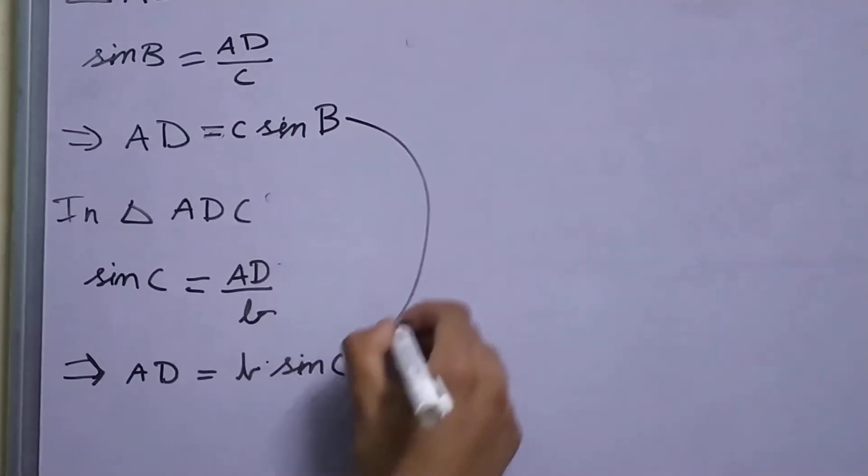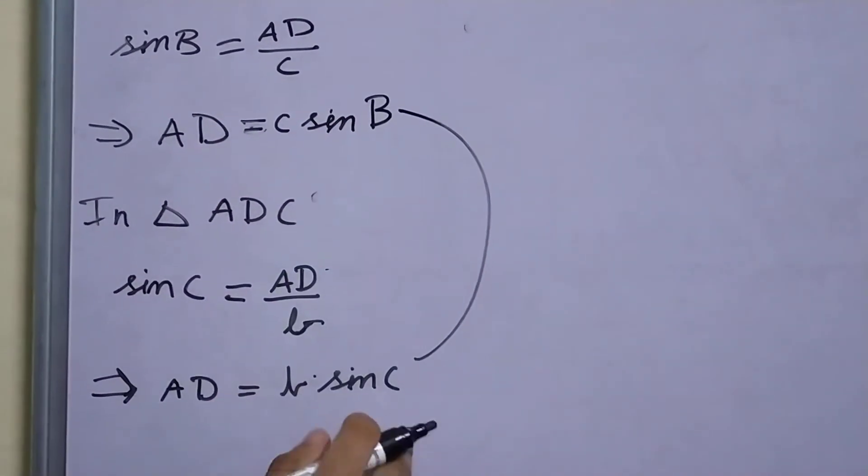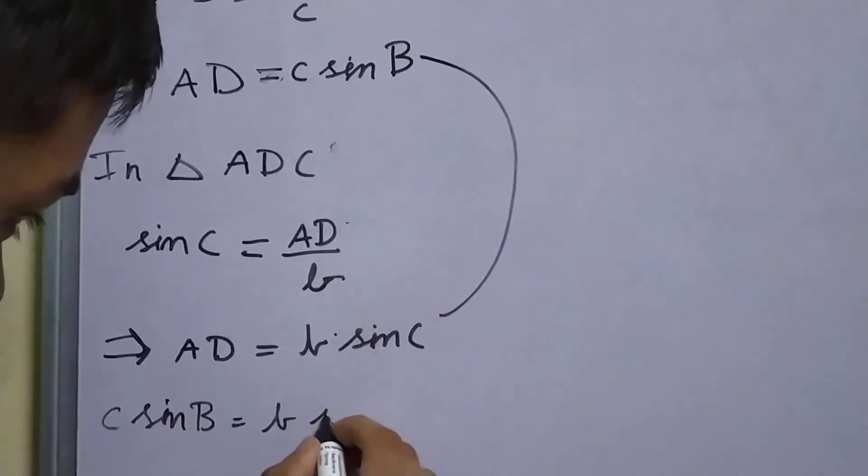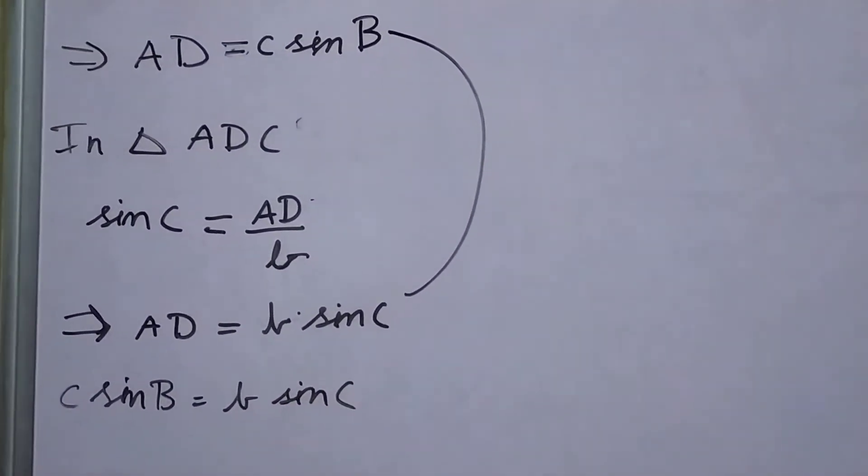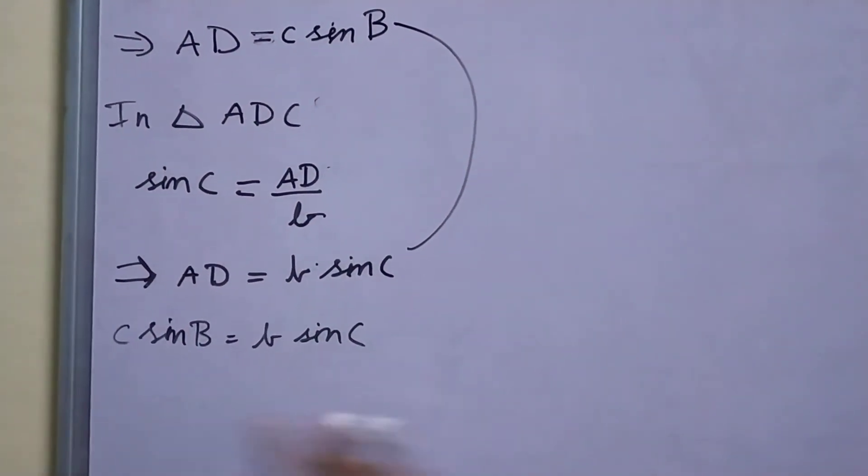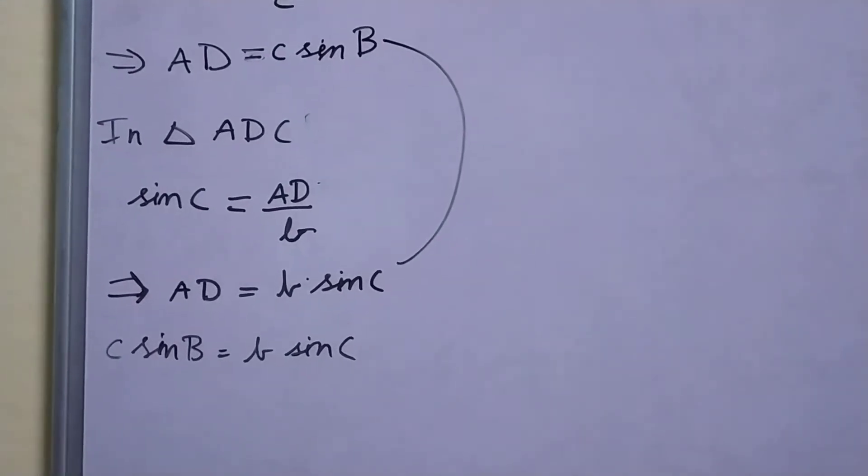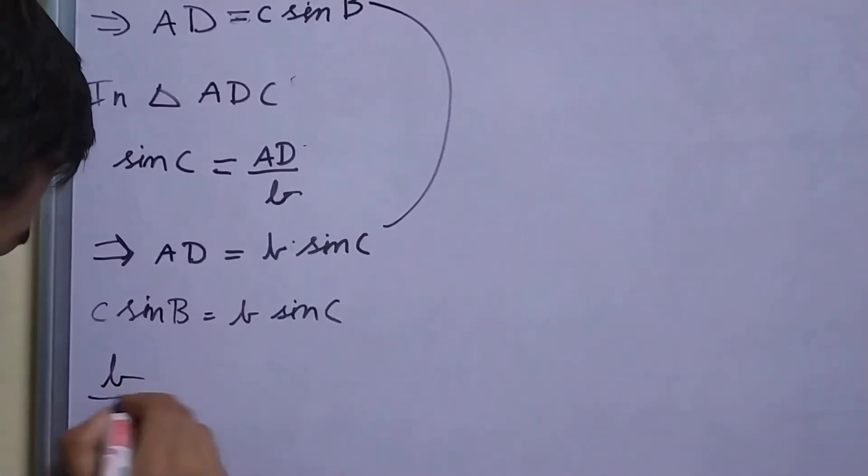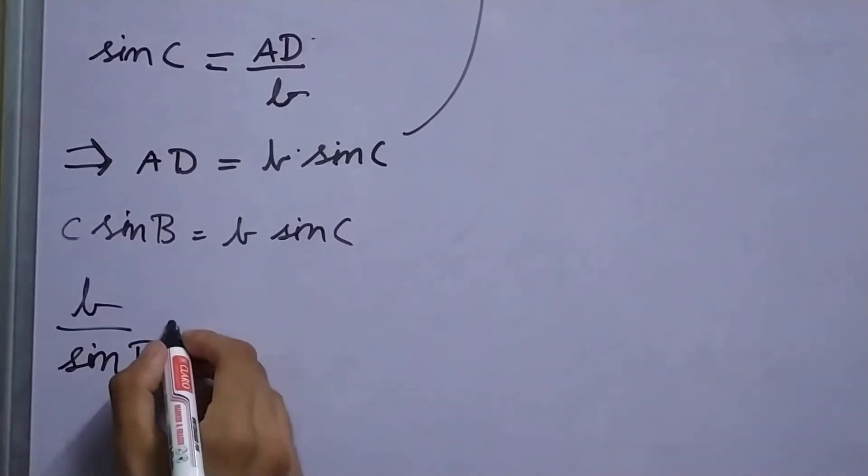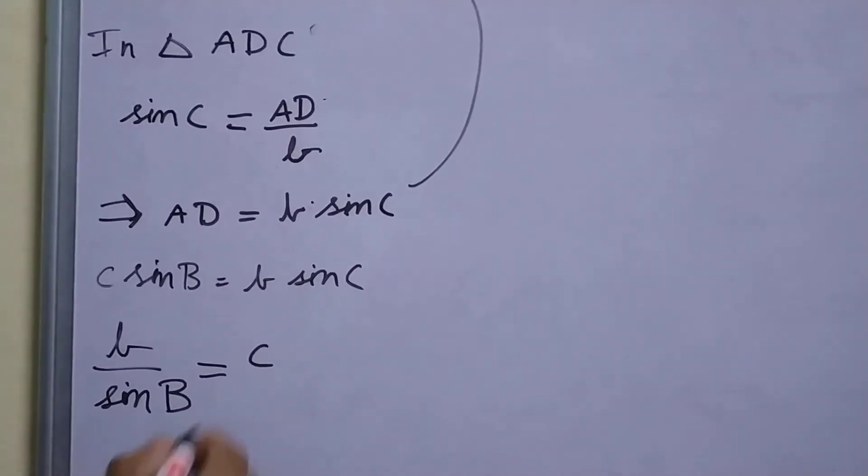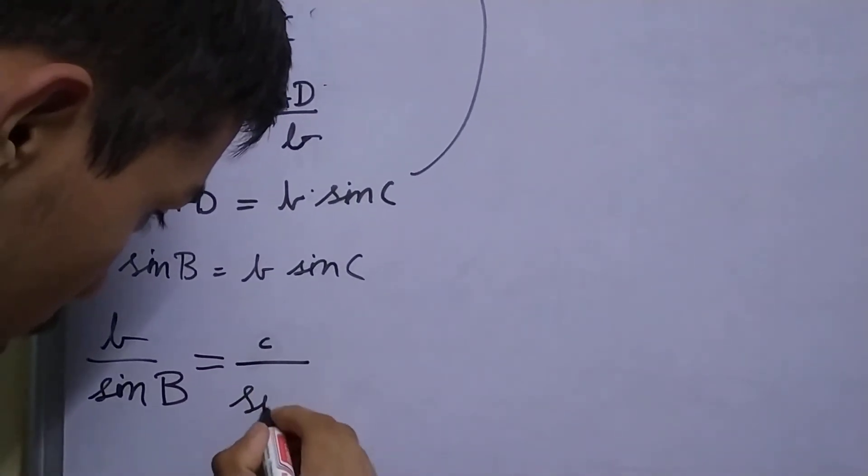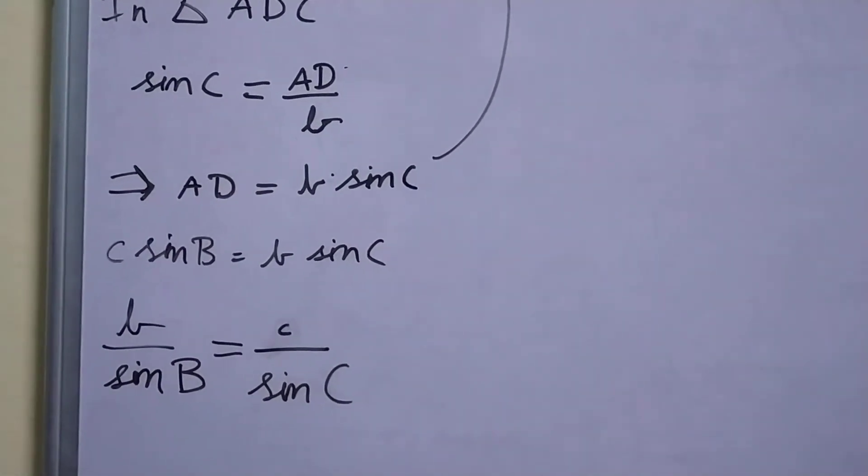Now using these two, AD is equal to c sine B which is equal to b sine C, we can say that c sine B is equal to b sine C. Now it makes much more sense to write the b's on one side and c's on the other side. So we can say that b upon sine B is equal to c upon sine C.